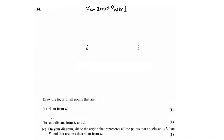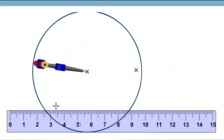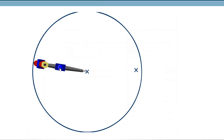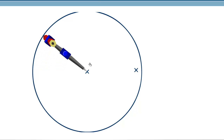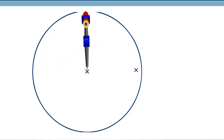The next question is equidistant from K and L. That means the locus from two points, bisecting a line. So let's bisect the line. We first join the two points K and L.